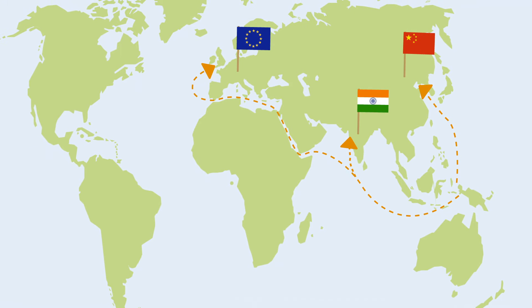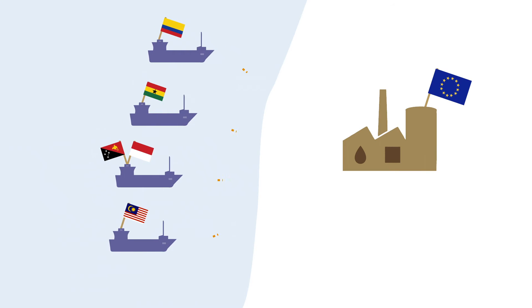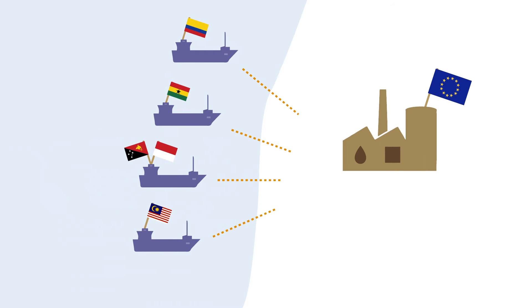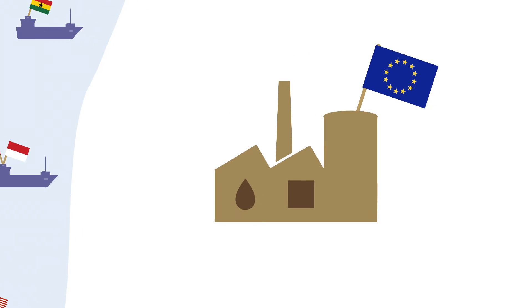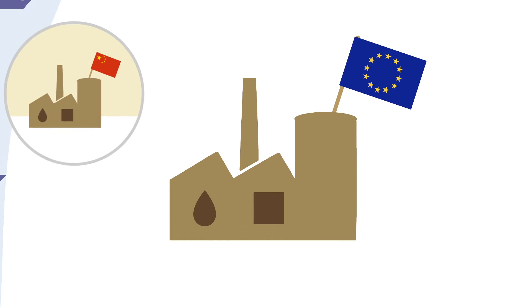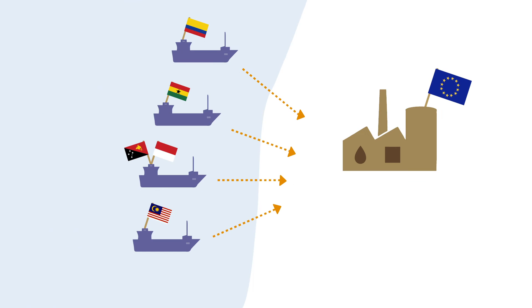On its way, the transporting vessel could even take in oil from other regions. Therefore, a refinery in Europe or China, for example, can be supplied by numerous mills from several countries.